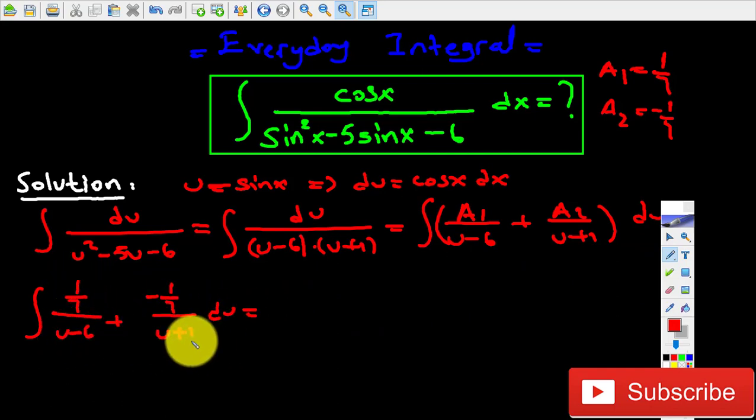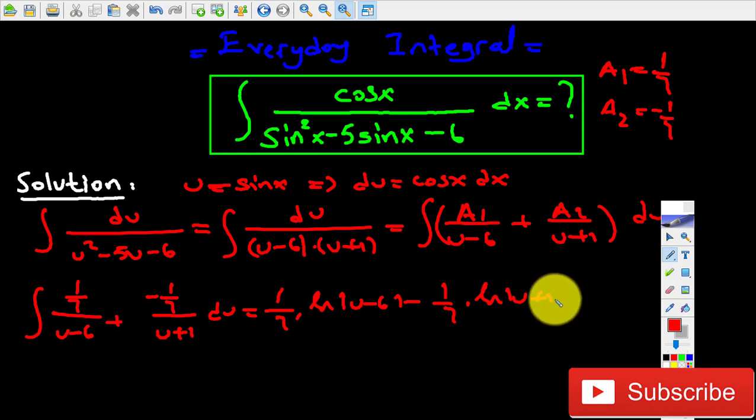Finding the integral of these two expressions is a lot easier than before. Basically, it's going to be equal to 1 over 7 natural log (u minus 6) minus 1 over 7 natural log (u plus 1) plus C.